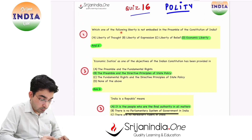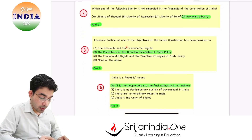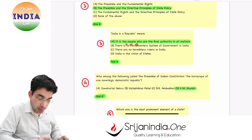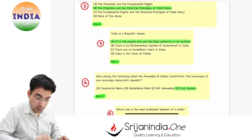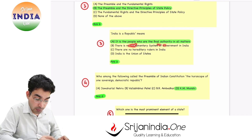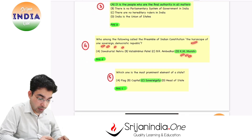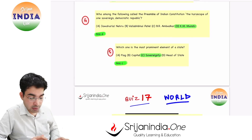Polity quiz ke answers: which one of the following liberty is not embodied in the Preamble of the Constitution of India? The answer is economic liberty. The Preamble and Directive Principles of State Policy mein economic justice ki baat hai. It is the people who are the final authority in all matters — yeh hai India republic ka matlab, joh asli taqat hai. K.M. Munshi sahab ne kaha tha 'horoscope of one sovereign democratic republic.' Preamble ko sovereignty most prominent element hota hai kisi bhi state ka.